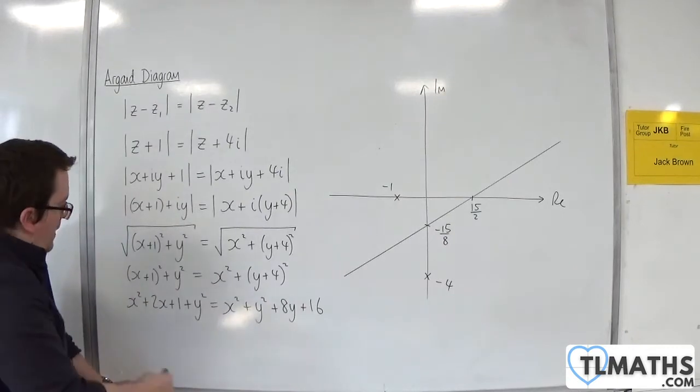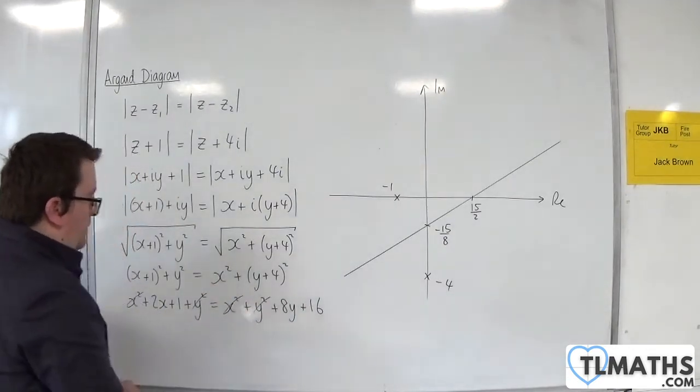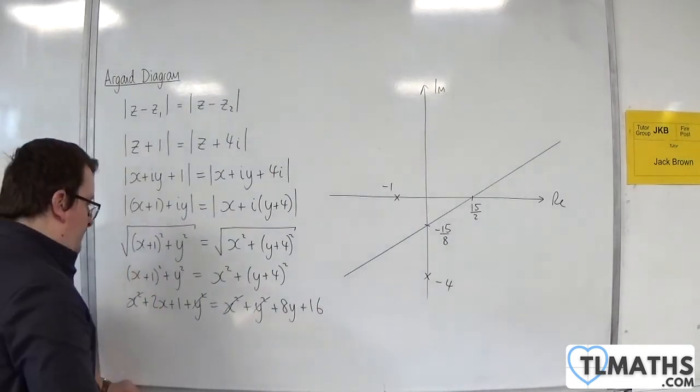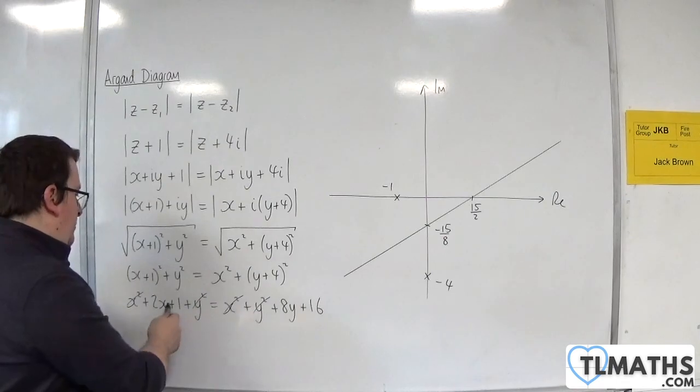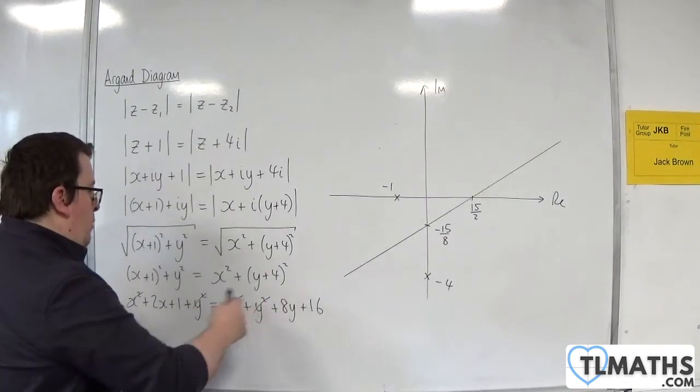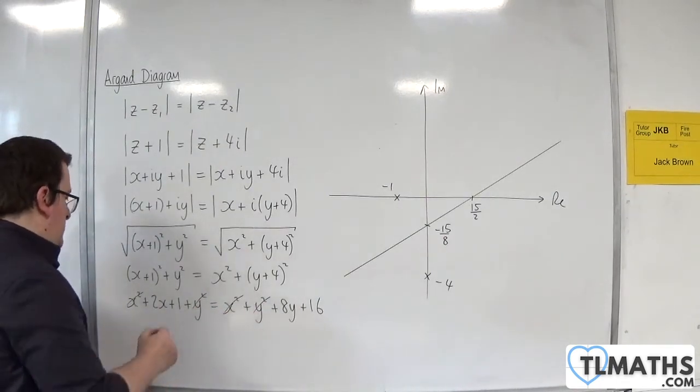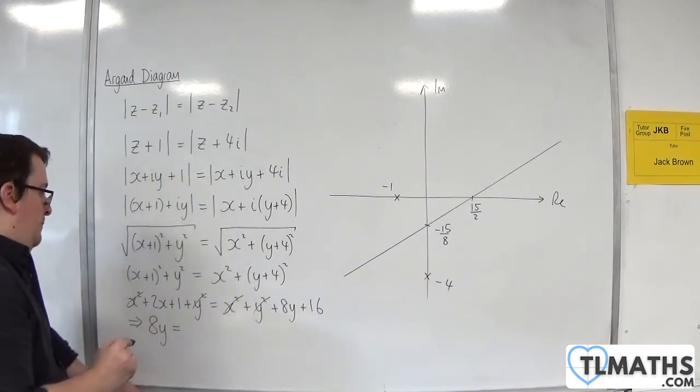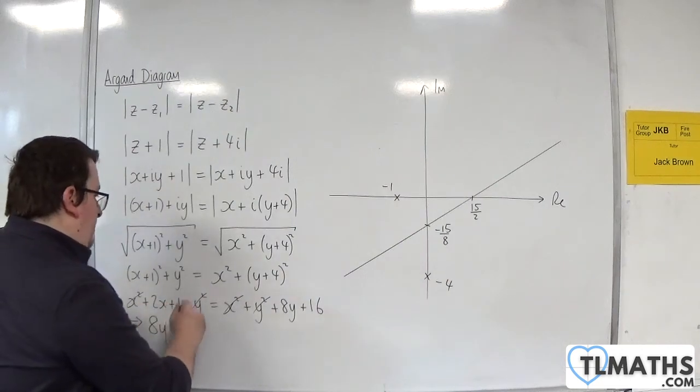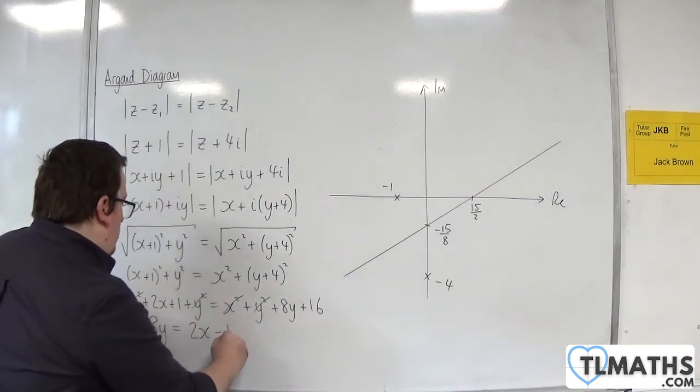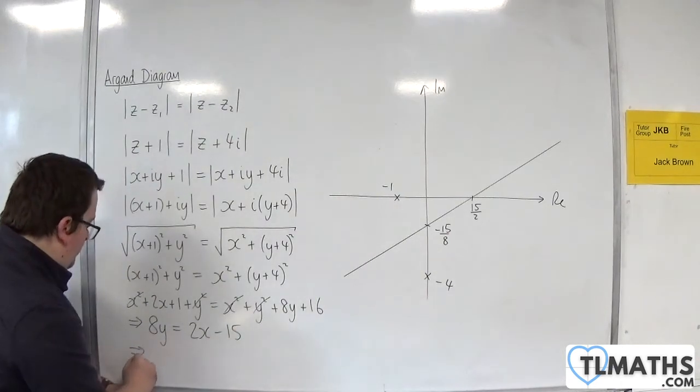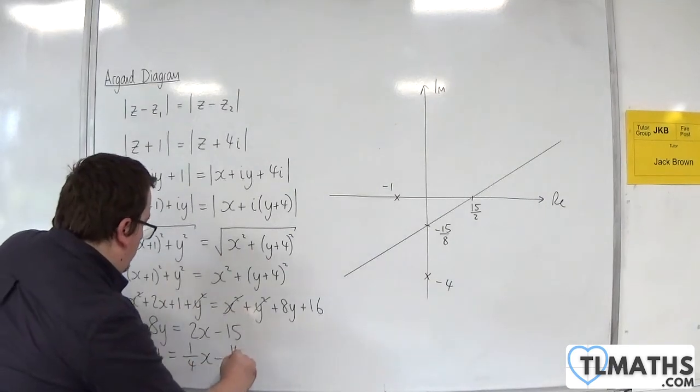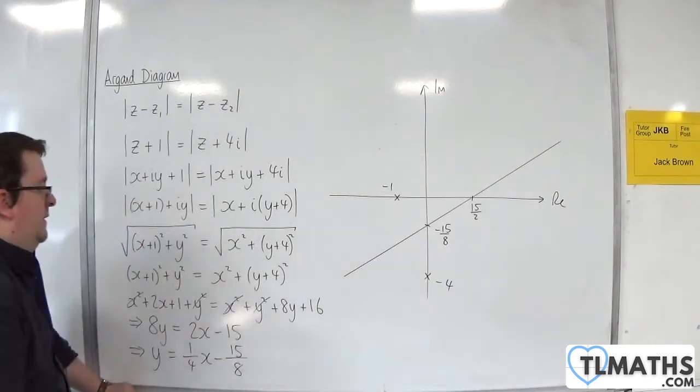What's neat about this is that the x² and y² go. They're all gone. What I've got left is 2x + 1 = 8y + 16. So 8y = 2x + 1 - 16 = 2x - 15. Divide through by 8, so we get y = 1/4x - 15/8.